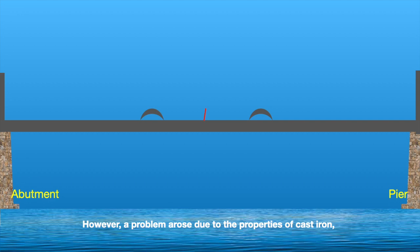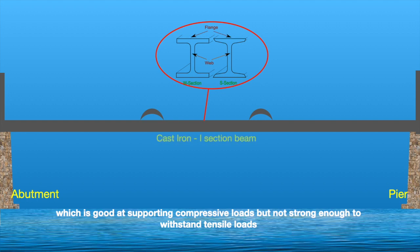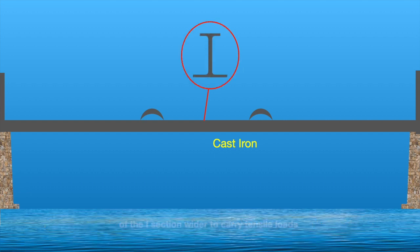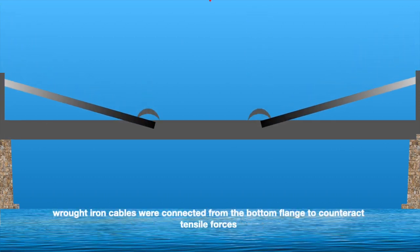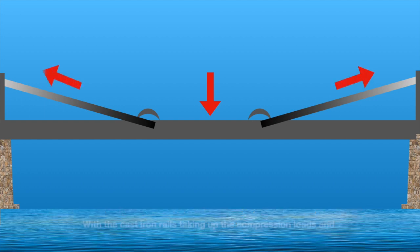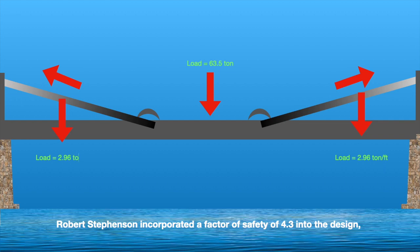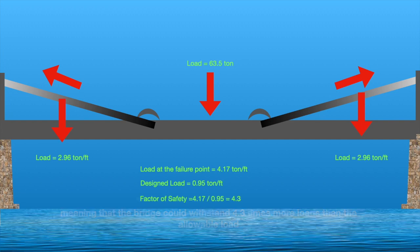However, a problem arose due to the properties of cast iron, which is good at supporting compressive loads but not strong enough to withstand tensile loads. To address this issue, the engineer Robert Stephenson made the bottom flange of the I-section wider to carry the tensile loads. To prevent sagging caused by the loads, wrought-iron cables were connected from the bottom flange to counteract the tensile forces. With cast-iron rails taking up the compression loads and the wrought-iron chain dealing with the tensile loads, the bridge appeared to be well equipped. Robert Stephenson incorporated a factor of safety of 4.3 in the design, meaning the bridge would withstand 4.3 times more load than the allowable load.